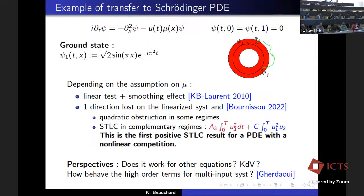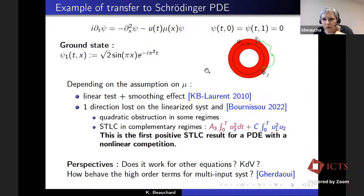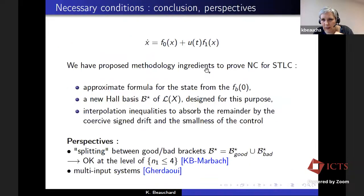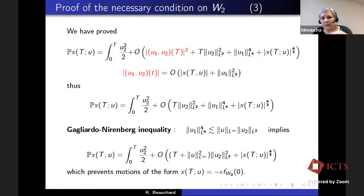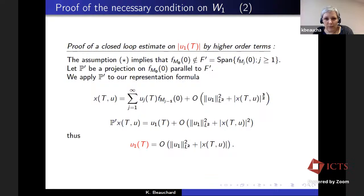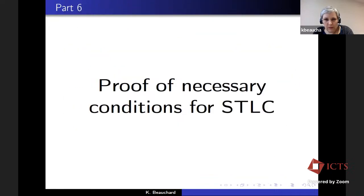A second question: since we have the Sussmann rank condition, why do we need these extra calculations to show controllability? I did not prove controllability — I proved obstructions to controllability. My course today was about necessary conditions for small-time local controllability, not sufficient conditions. Sussmann did two famous things: one positive result and one negative result. He gave the first proof of this obstruction using the Chen-Fliess expansion, and also proved a positive result — the Sussmann sufficient condition — which was not the topic of today's course.